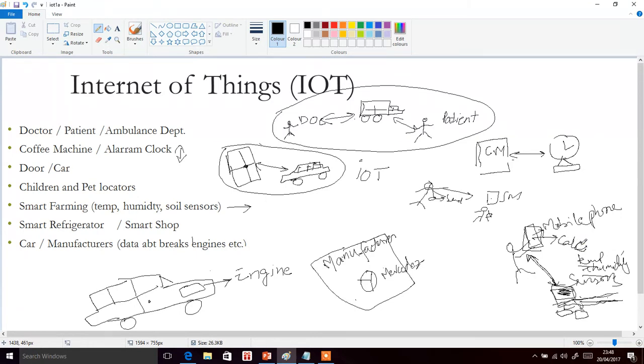Then we have another example which is smart refrigerator or smart shop. They can also be combined. For example, you have certain items in your refrigerator all the time.